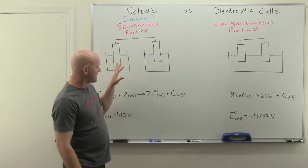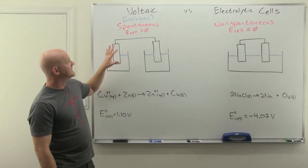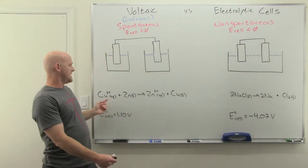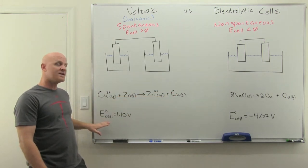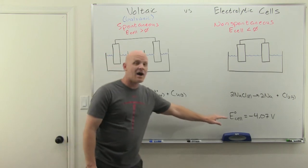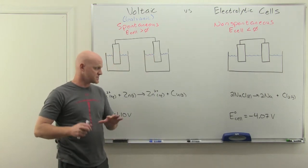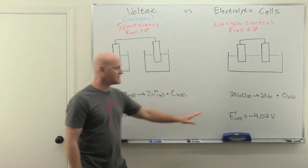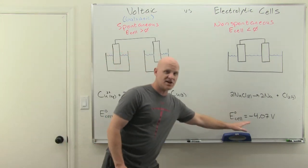We've got a couple of reactions we're going to use as examples for voltaic and electrolytic cells. For the voltaic cell we have copper two-plus plus zinc — I've already calculated this E-cell, and the next lesson we'll learn how to calculate these values using the table of reduction potentials. For now, just take it for granted: this one's positive and spontaneous, the other one's negative and non-spontaneous.